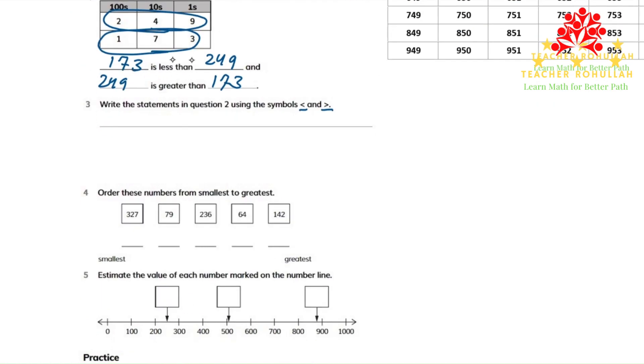Now we can show these two numbers using the inequality symbols. We can write 173 is less than 249 and 249 is greater than 173. So you know about the symbols how to use them.